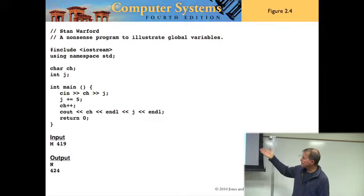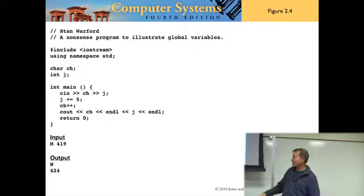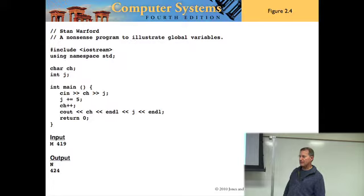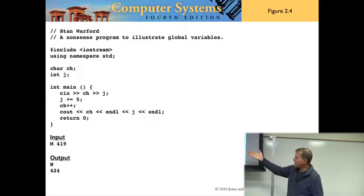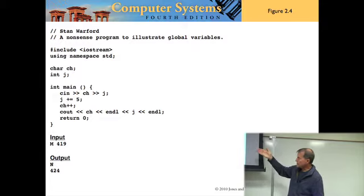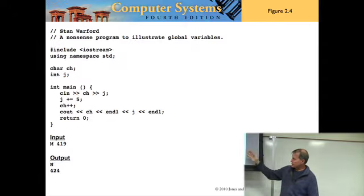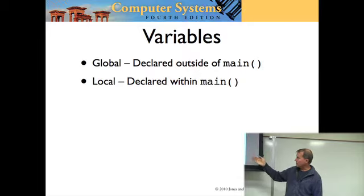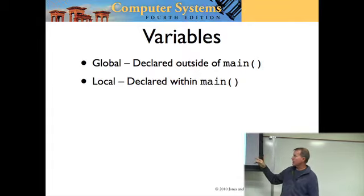Here's a nonsense program to illustrate global variables. What kind of variable is CH? It's global — it's outside the main program. CH is a global variable of type char. J is a global variable of type int. This program inputs CH and J, does some processing, and outputs the result. Figure 2.5 is a picture of memory when the program executes.